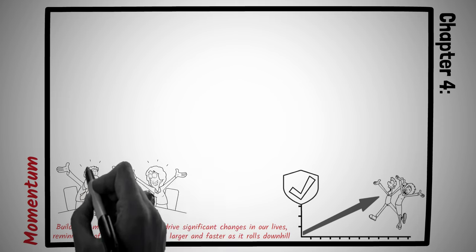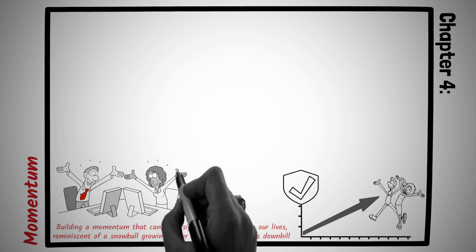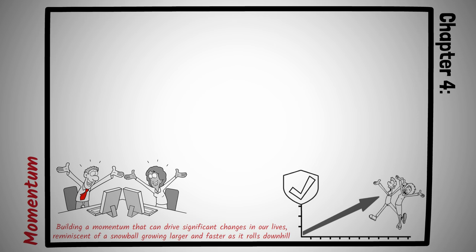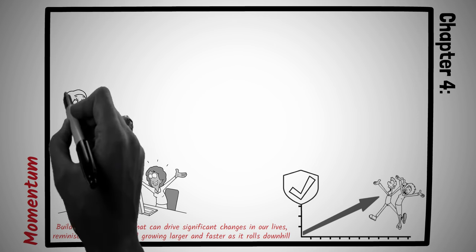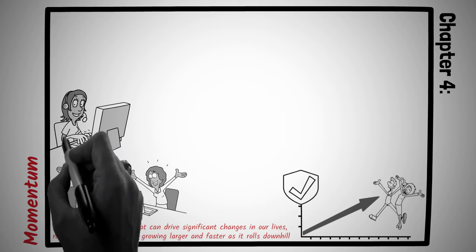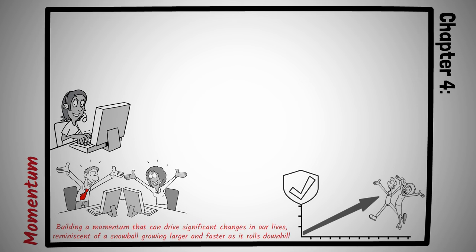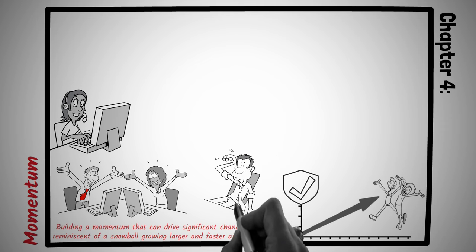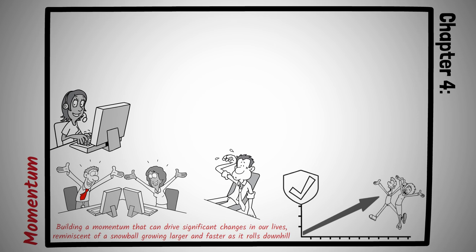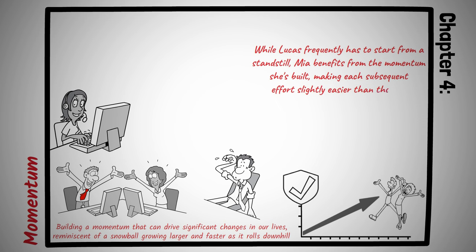Imagine two entrepreneurs, Lucas and Mia. Lucas has a great business idea and starts with a burst of enthusiasm. However, his efforts are sporadic. He works in intense spurts followed by long breaks. Mia, on the other hand, commits to her business idea by dedicating a few hours every single day, even if some days she doesn't feel like it. Initially, their progress seems similar, but over time, the disparity becomes evident. Lucas's erratic work pattern makes it difficult for him to keep track of his progress and maintain client relationships. Mia's consistent efforts, however, lead to her business processes becoming smoother, her network expanding, and her client base steadily growing. While Lucas frequently has to start from a standstill, Mia benefits from the momentum she's built, making each subsequent effort slightly easier than the last.